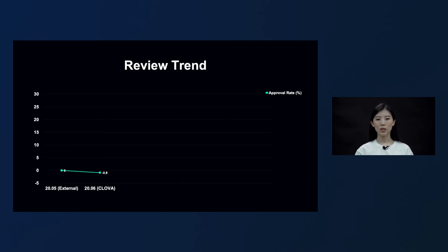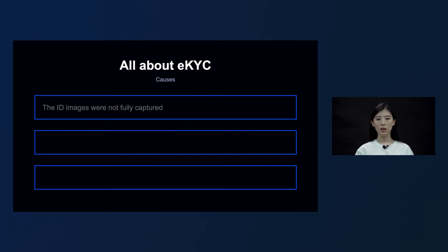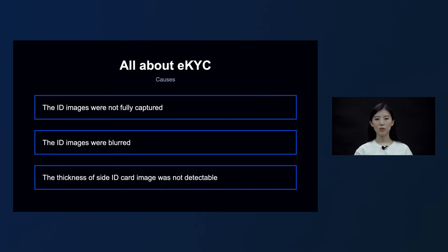However, that number was not achieved as soon as we implemented eKYC using Line Clova. In June, the approval rate actually fell slightly, so we looked into why applications were rejected to find out why the approval rate differed from what we expected. The reasons for rejection fell largely into three categories: the ID images were not fully captured, the ID images were blurred, and the thickness of the ID card image was not detectable from the side photograph of the ID.